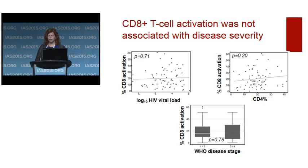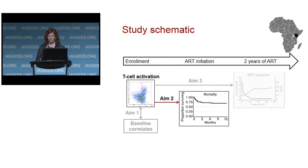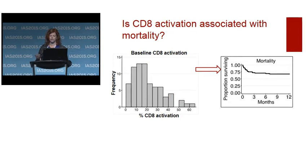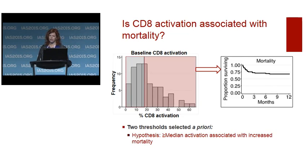However, CD8 activation greater than the median was not associated with increased mortality. In fact, there was a trend toward decreased mortality in this group after adjusting for WHO disease stage. When examined further, there was no dose-response — this effect was entirely driven by the subgroup with activation less than 5%, with no difference between greater or less than median activation after removing this group. When the 5% threshold was used, infants with less than 5% activation were at three-fold greater risk of mortality than those with greater activation, after adjusting for WHO disease stage, with comparable results when adjusted for viral load or CD4%.